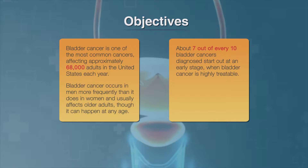About 7 out of every 10 bladder cancers diagnosed start out at an early stage, when bladder cancer is highly treatable. However, even early-stage bladder cancer may recur in the bladder. For this reason, people with bladder cancer typically need follow-up tests for years after treatment to look for bladder cancer that recurs or advances to a higher stage.